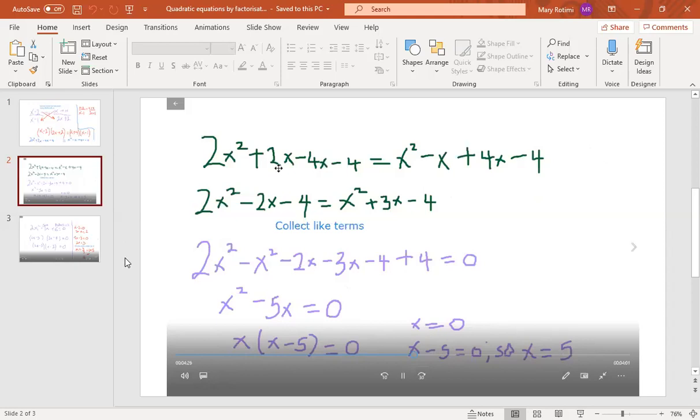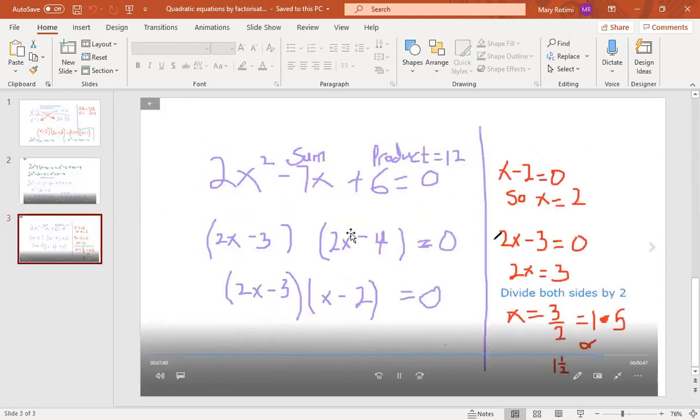Another question that students said they couldn't really understand how to do was this bit here. So here you have 2x² -7x +6. Remember the product is 12 because you do the coefficient of x², you times it by the last number here to get the product. So you want two numbers that you can multiply to get 12 but add to get -7. Those two numbers are -3 and -4 because -3 times -4 will give you +12, and -3 add -4 will give you -7. So you put -3 in the brackets. Remember the first thing is to put these 2x in the two brackets you make at first.